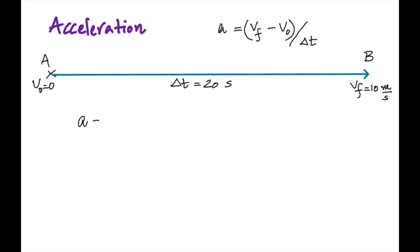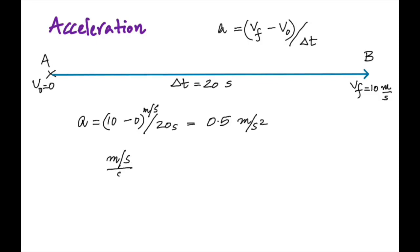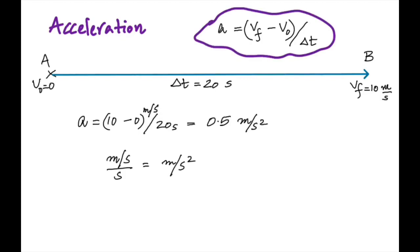So easy — do it. 10 minus 0, divided by 20 — you get 0.5 meter per second squared. Don't get confused with the units of acceleration: it's meter per second squared.